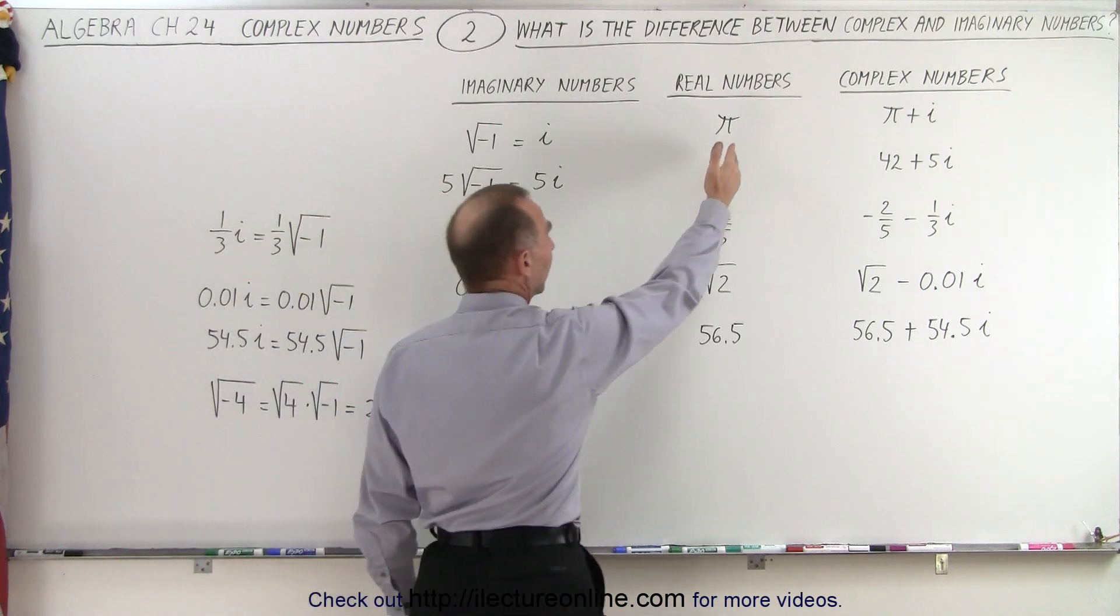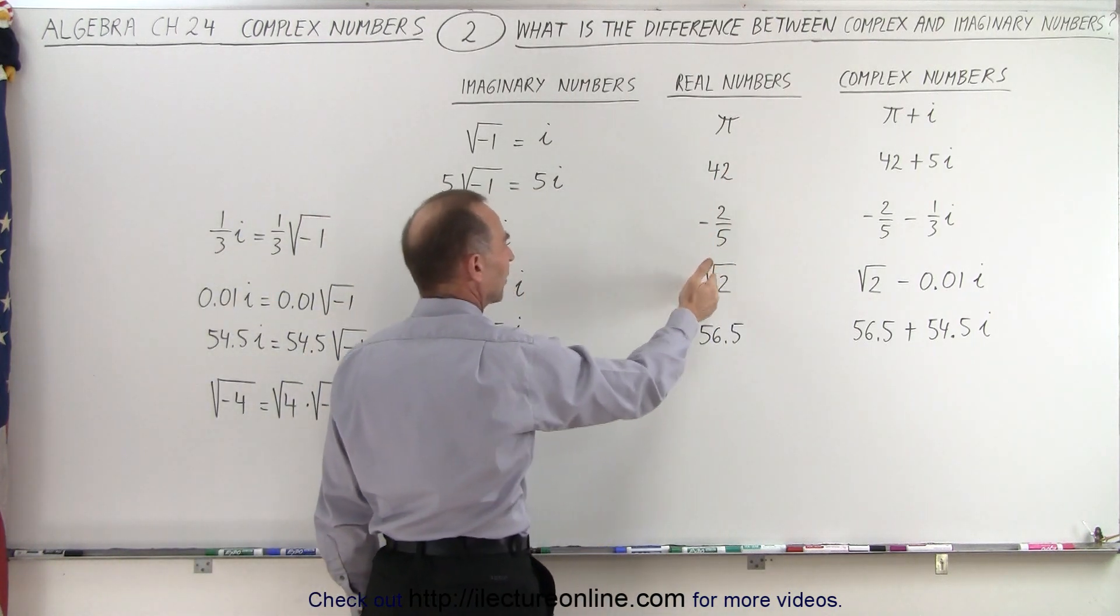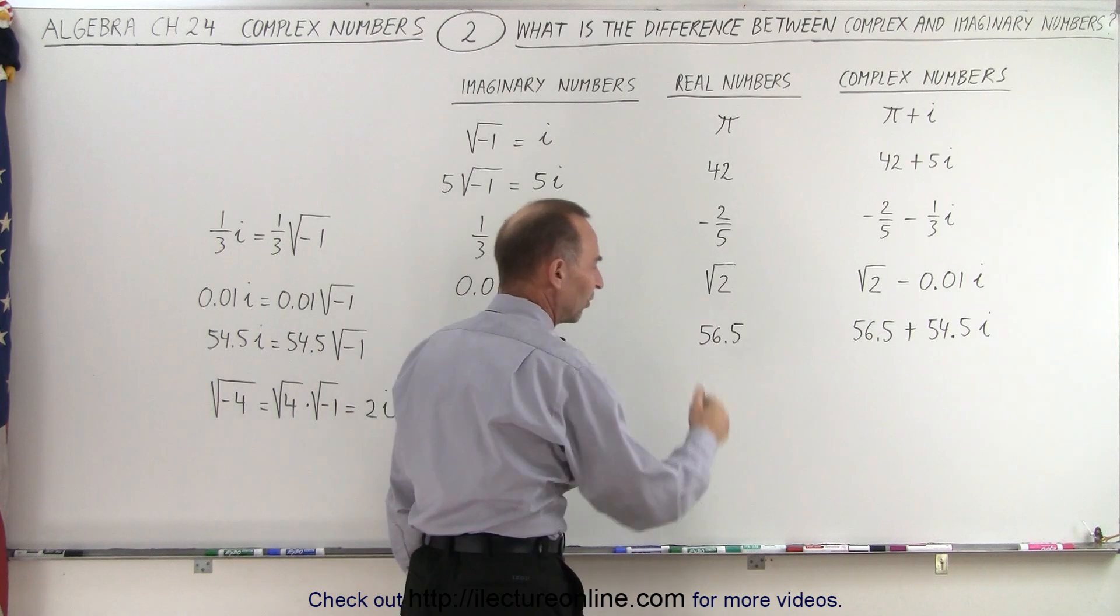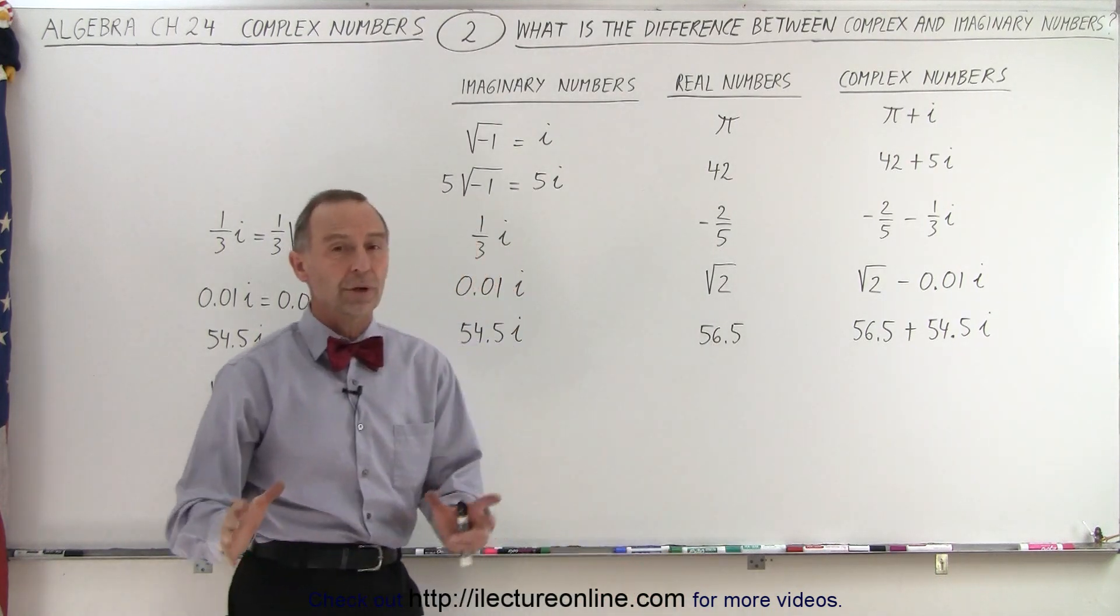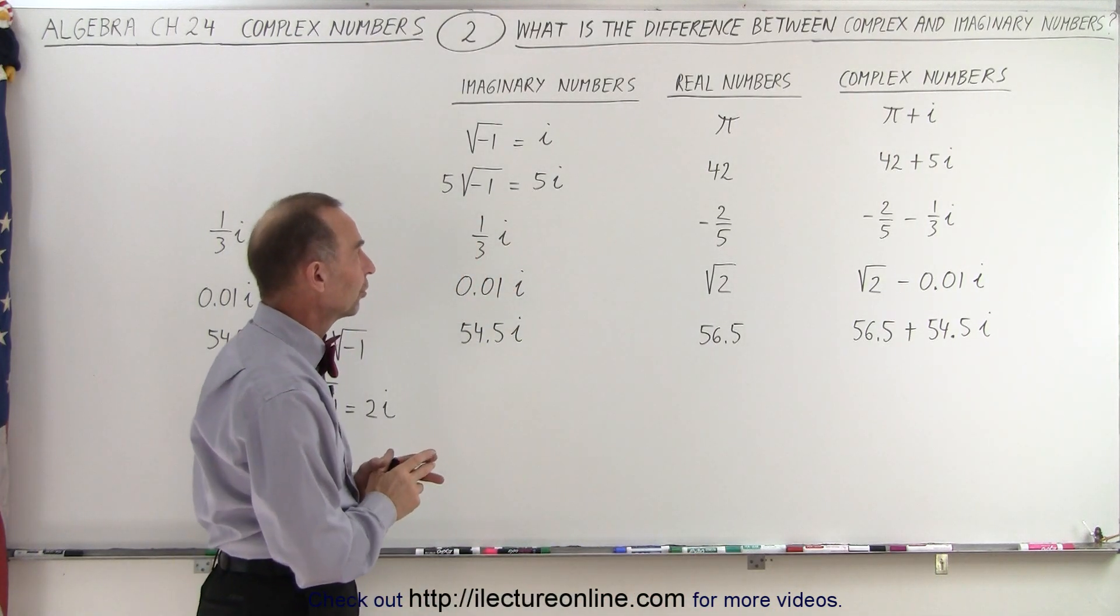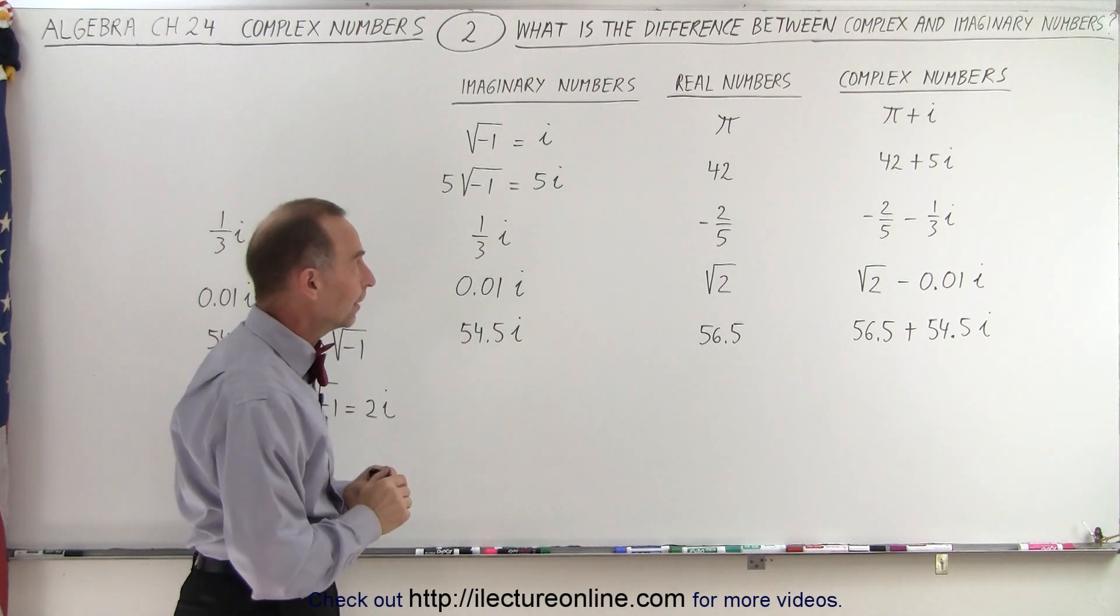Now the real numbers of course can be pi, 42, negative 2 over 5, the square root of 2, 56.5. All those are what we call real numbers. They actually fit onto the real number line.